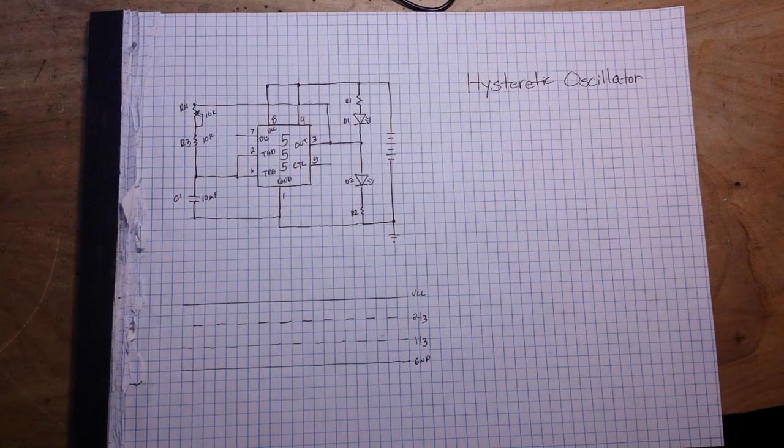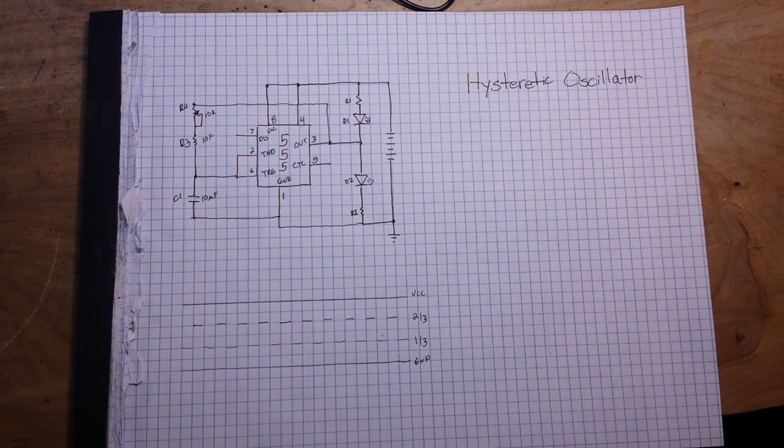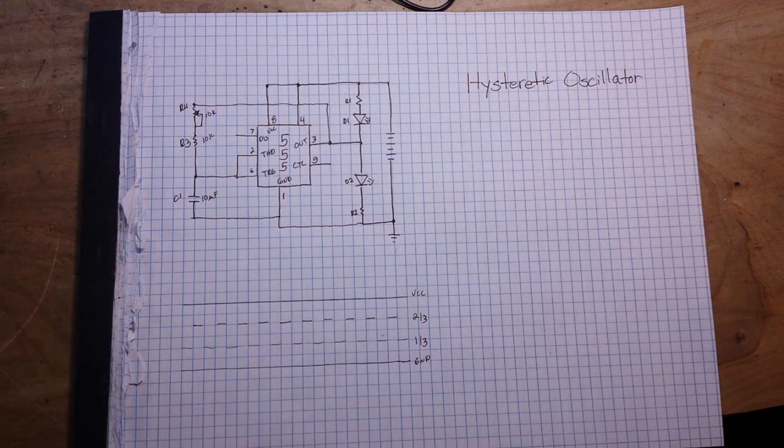Hey, what's happening guys? Today we're going to talk about another classic circuit you should know, and that's called the hysteretic oscillator. To make our hysteretic oscillator, we're going to use our old friend the 555 timer.